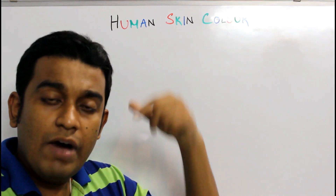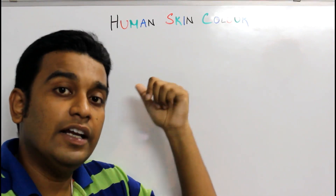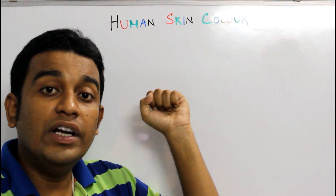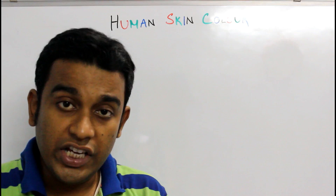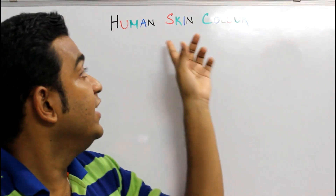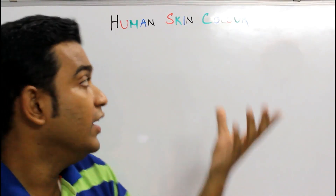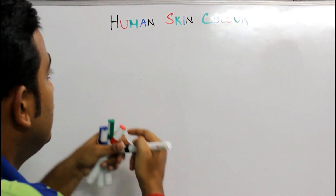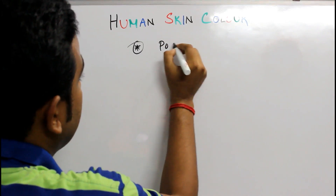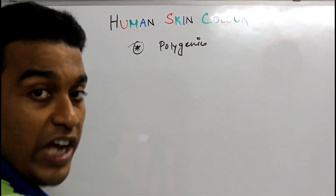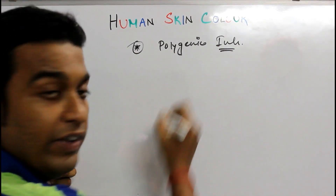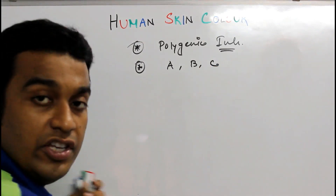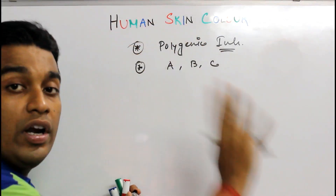The first thing about human skin color is that it is an example of polygenic inheritance. Mark my words carefully — polygenic inheritance means this is actually a quantitative analysis, not qualitative. You have three genes altogether, and these three genes control a single character — the skin color. So for skin color you have gene A, gene B, and gene C. These three genes control only skin color.